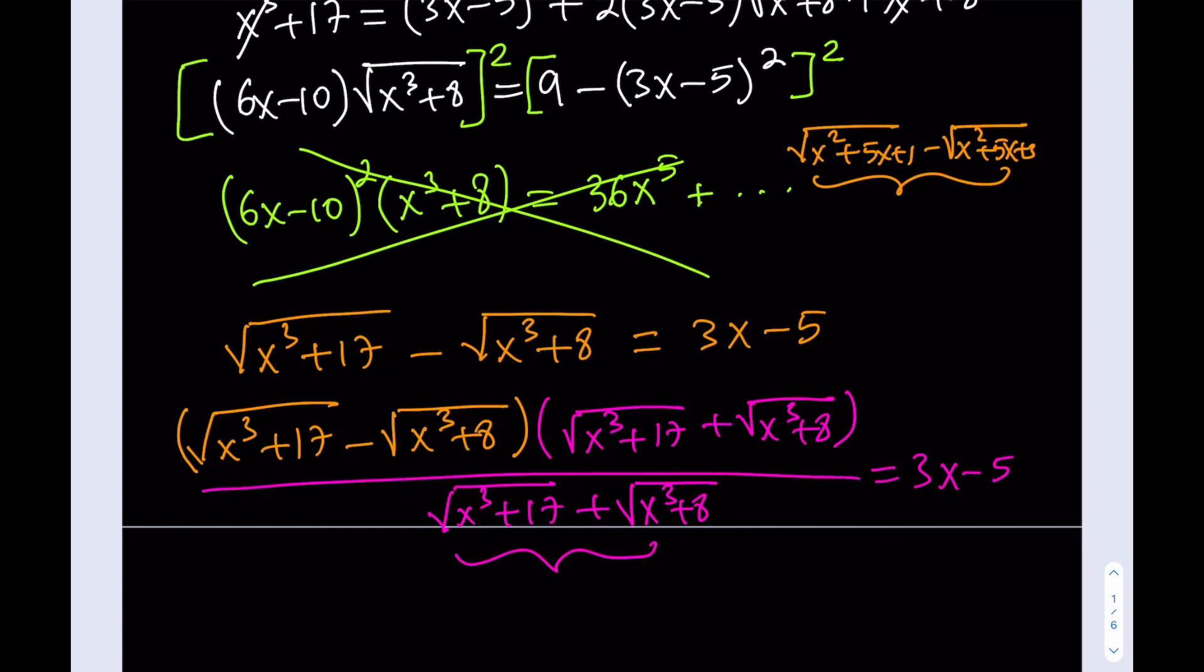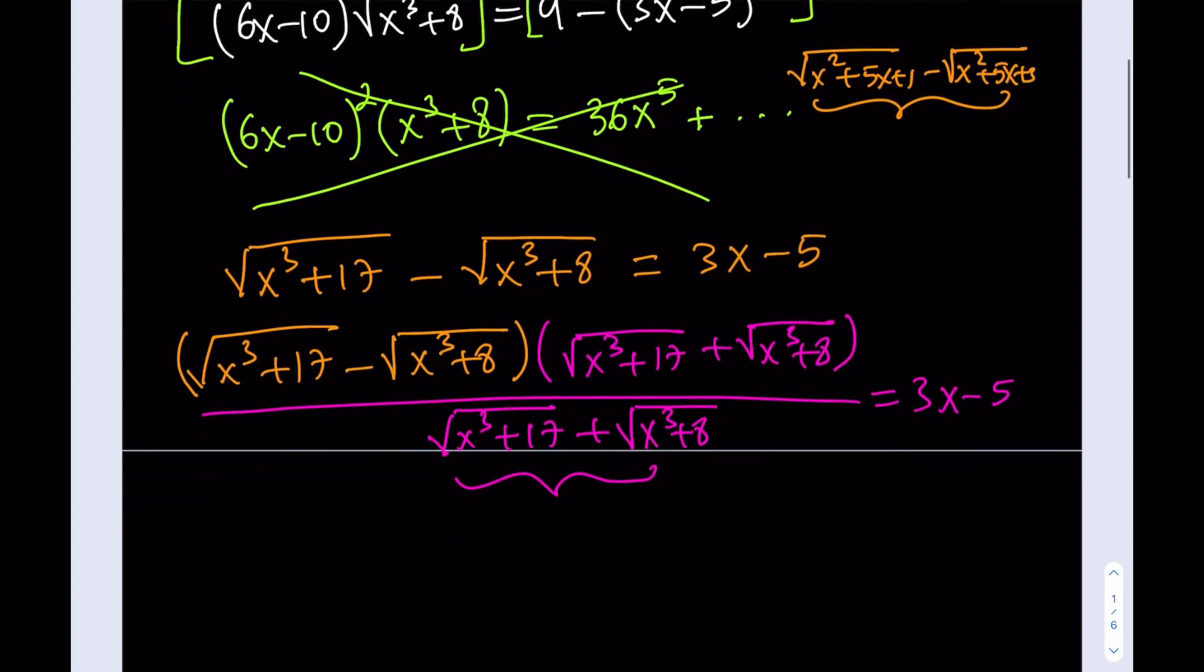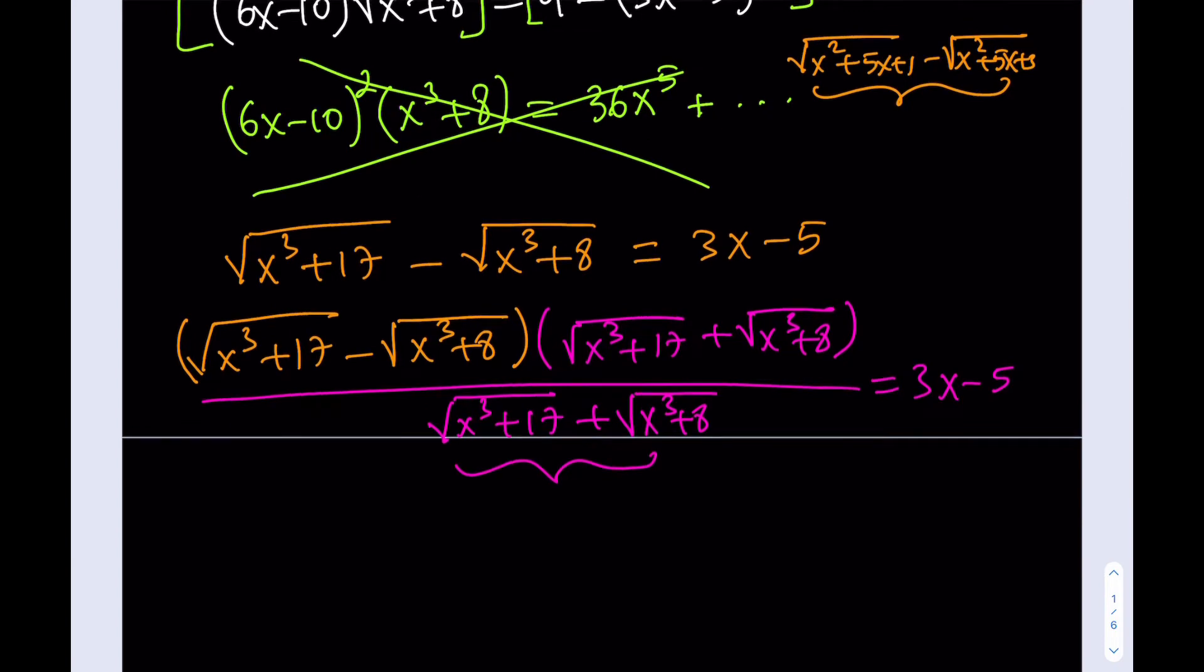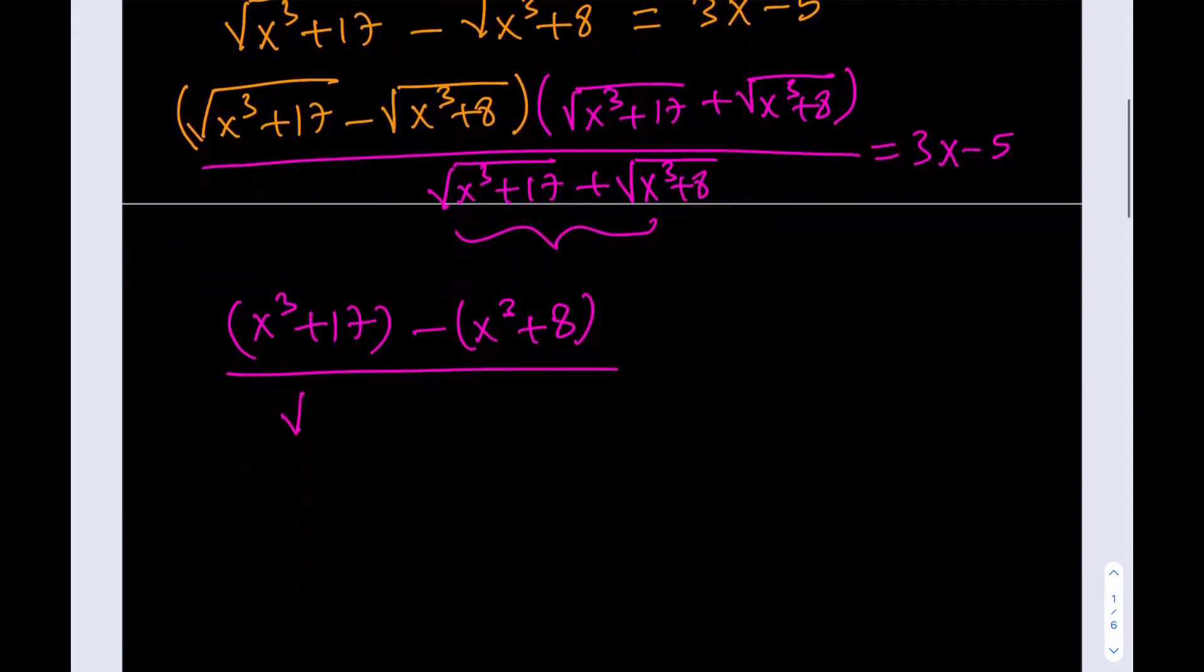Now, what am I going to do next? So what I'm going to do is actually simplify this. I mean, there is a reason why we multiply by conjugates. Why do we do that? Because we get difference of two squares. So the top gives us x cubed plus 17 minus x cubed plus 8 from difference of two squares, as you know. And the bottom is going to equal the same thing. Nothing fancy about it. But that's good.